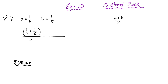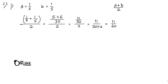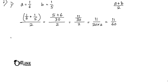Since the LCM of 6 and 5 is 30, it becomes (5 + 6) / 30 = 11/30, divided by 2. That gives 11/30 × 1/2, and your answer is 11/60. It's very easy. There are four sums total, so I'm going to solve the last one — the fourth one.